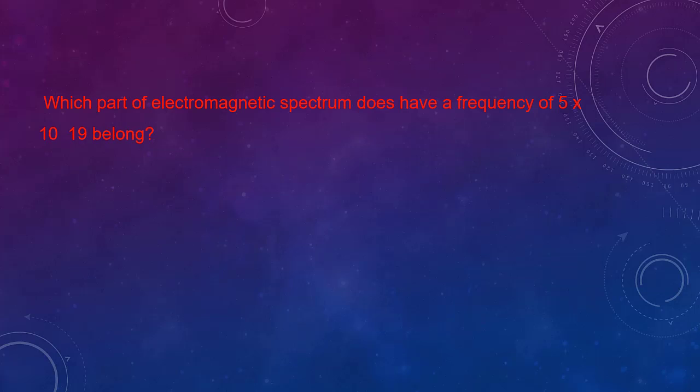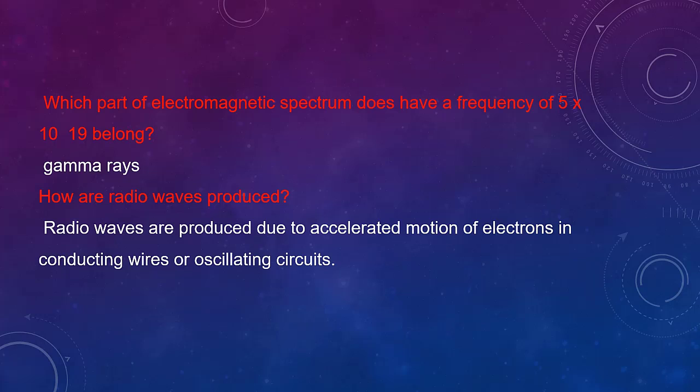Next question: which part of the electromagnetic spectrum does a frequency of 5 × 10¹⁹ belong to? It belongs to gamma rays. How are radio waves produced? Radio waves are produced due to accelerated motion of electrons in conducting wires or oscillating circuits. All these explanations were given in previous videos if you have any doubts.